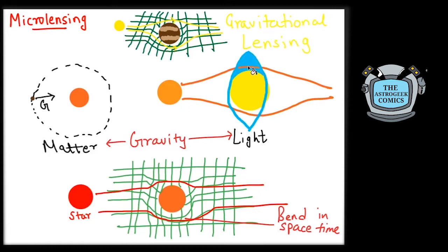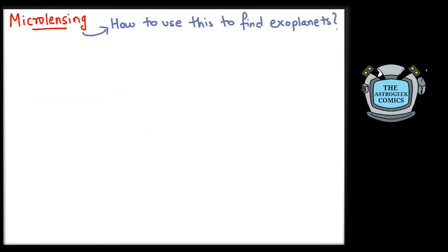This bending of light because of gravity is called gravitational lensing. In a way, gravity behaves as the lens which also bends light passing through it. But how do we use it to find exoplanets?